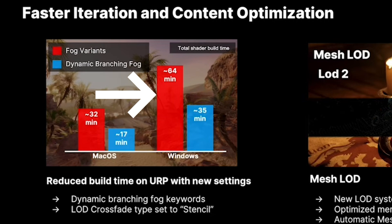One cool thing they mentioned is a change in build optimization. Unity claims that total build times on Windows that previously took about 64 minutes is now taking just about 35 minutes — almost cutting your time in half. This is for a specific build between fog variance and dynamic branching fog, so it's for builds with fog capabilities, which is a bit niche. But chopping your total shader build time in half is not a bad thing. I think this is a point for Unity showing they are working to make the engine more efficient, just like they promised.